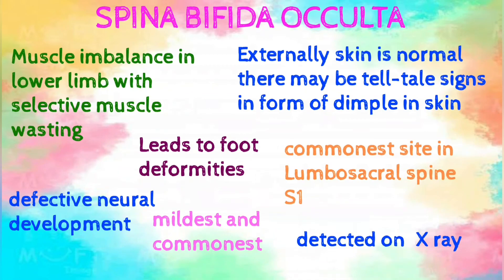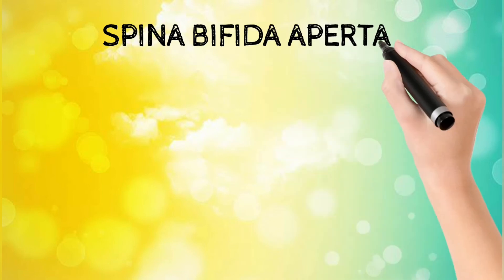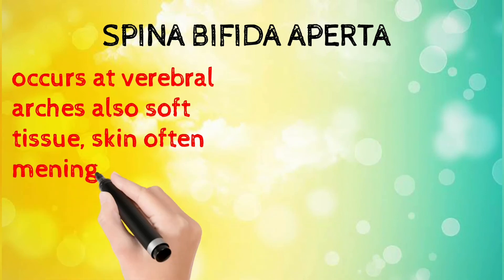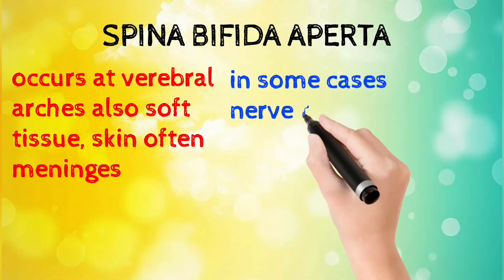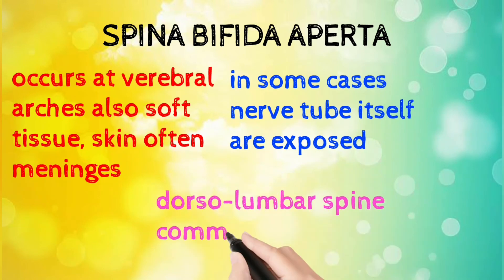I hope you get a little outline about spina bifida occulta. So let's move to another type, which is spina bifida aperta. It occurs at the vertebral arches also in the skin tissue. Skin, often meninges, in some cases nerve tubules itself are exposed, and also lumbar spine is commonly affected.